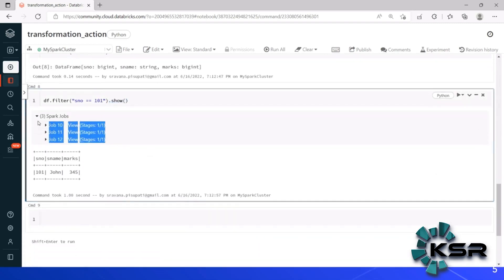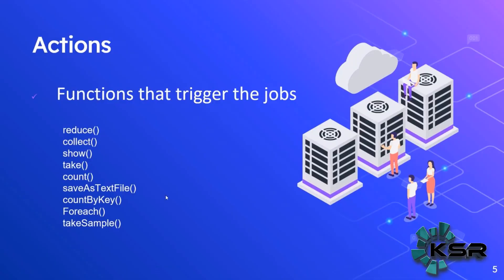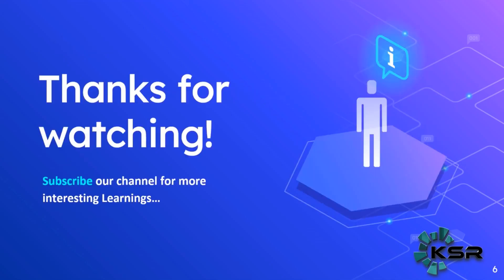You can see clearly: when only a transformation is given, nothing is executed — but when you trigger it with an action, jobs are created. This is the difference between actions and transformations. Whatever functions you call on RDDs and DataFrames to give instructions are called transformations. Transformations will not be triggered — they keep a logical plan ready. The job is triggered only when you perform an action. This concept is called lazy evaluation. Thanks for watching — please subscribe to our channel for more interesting learning.